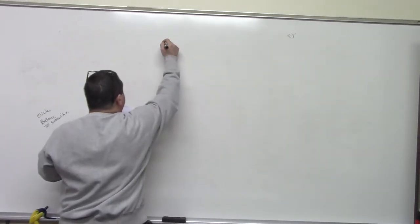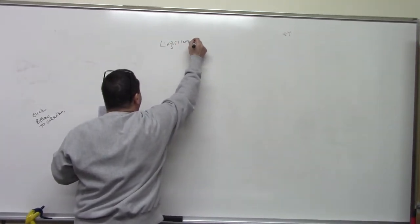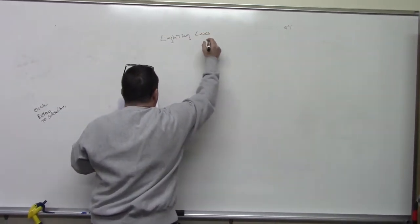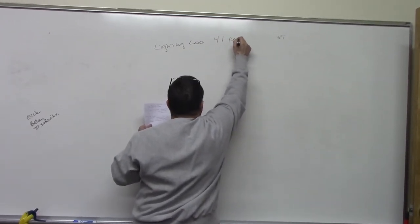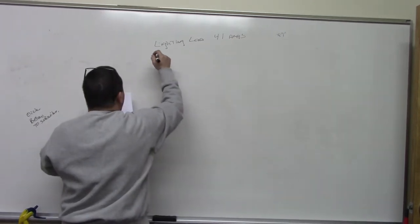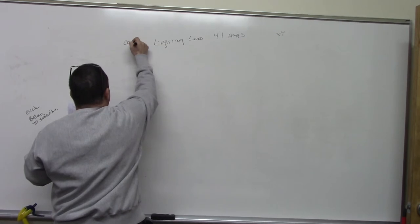We have a lighting load of 41 amps. We have a non-continuous load, this is continuous, right, because it's a lighting load.